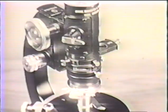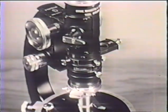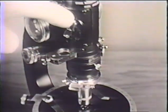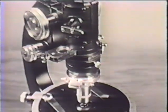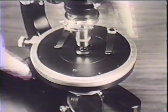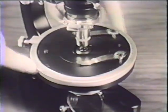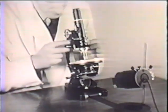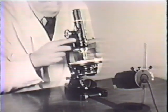The Bertrand lens can be brought into the tube so the image of the back aperture of the objective is formed in the eyepiece instead of the object. A graduated rotating stage must be fitted so that angular rotations of the object can be measured. First, we'll remove the polarizing equipment and use ordinary light.